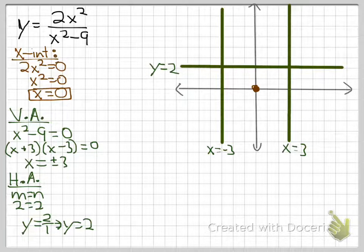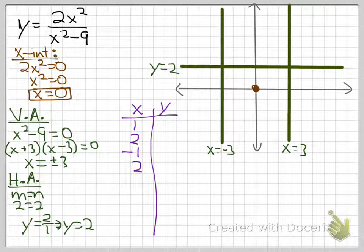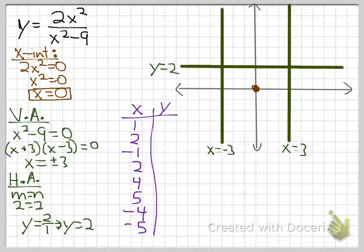We'll make a table of x and y values. We know at x equals 0 we hit the point, and at x equals negative 3 and positive 3 the function is undefined. To understand the graph's behavior, we'll try x equals 1, 2, negative 1, and negative 2 between the asymptotes, and x equals 4, 5, negative 4, and negative 5 outside the asymptotes.